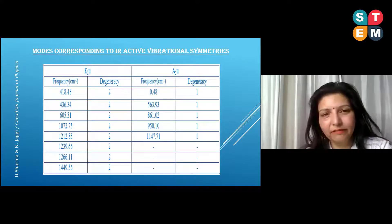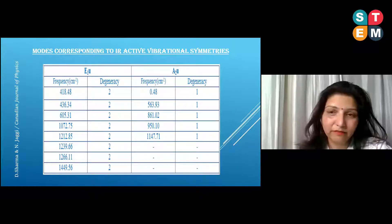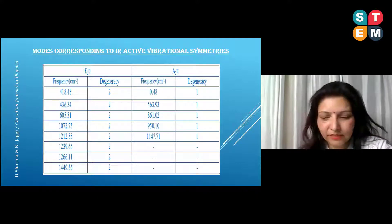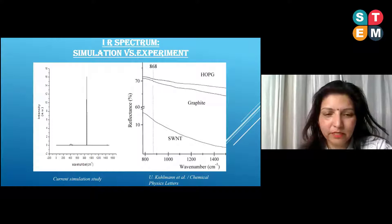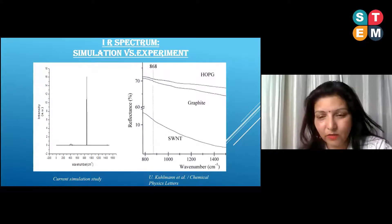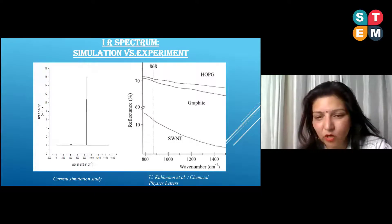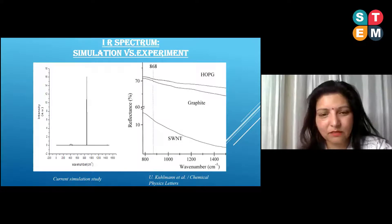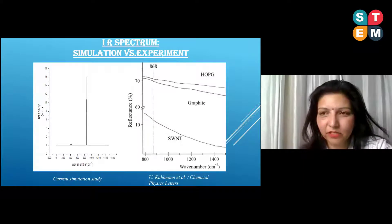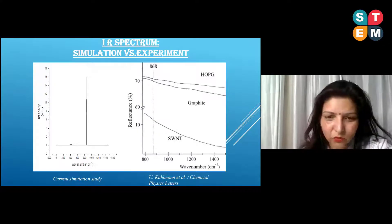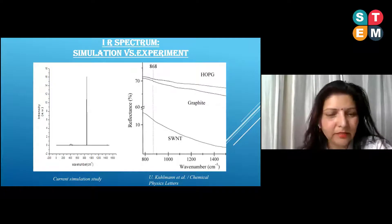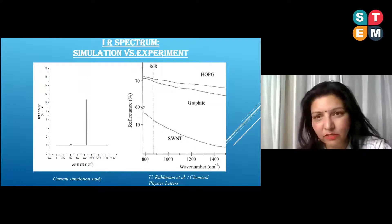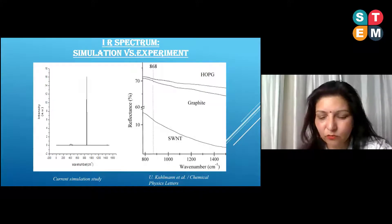Similarly, we segregated the IR active modes theoretically and from these constructed the IR spectrum. We then compared our theoretically simulated spectrum with the spectrum published in Chemical Physics Letters by Yu and Hilman et al., which is an experimental spectrum. On the right-hand side is the experimental IR spectrum of the same structure and on the left is our theoretically calculated IR spectrum. The peak around 868 cm⁻¹ is predicted both theoretically and has been observed experimentally, showing our simulation is quite close to experimental results.